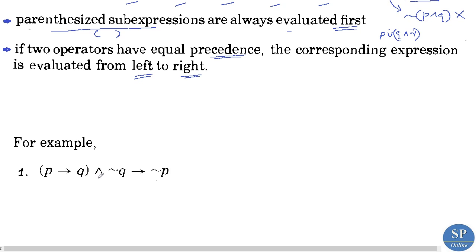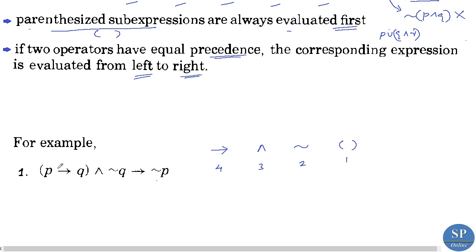As an example, consider the expression (p implies q) conjunction negation-q implies negation-p. We have three operators: implication, conjunction, and negation, plus brackets. The order of precedence is: first the bracket, second negation, third conjunction, fourth implication.